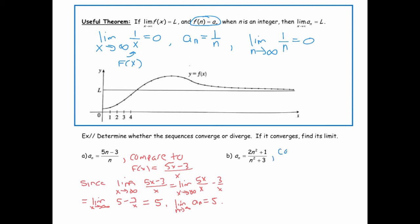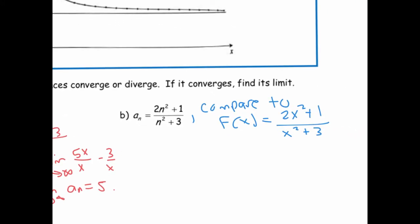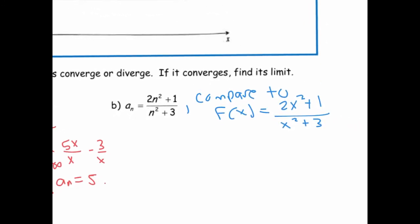Similarly, we could do the one on the right. We could say this is going to behave like f(x) = (2x² + 1)/(x² + 3). Since the limit as x goes to infinity of (2x² + 1)/(x² + 3)—if you wanted to, I think everyone hopefully at this point understands that this is just going to be the ratio of the leading terms.